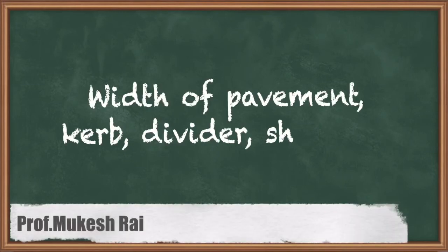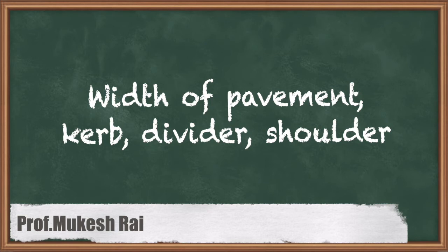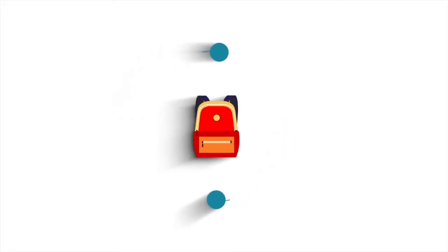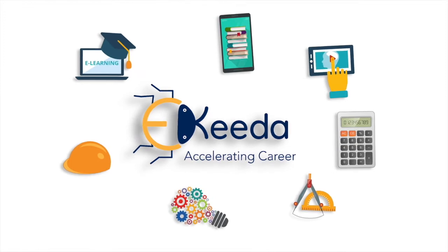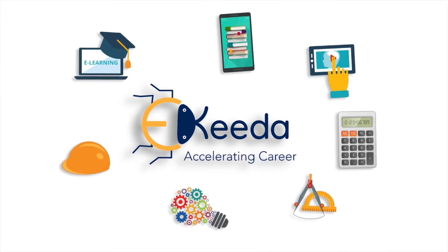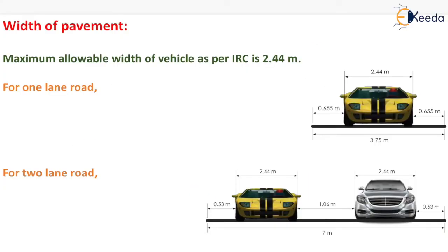Hello students, today we are going to study Width of Pavement, Curve, Divider, and Shoulder. The maximum allowable width of vehicle as per IRC is 2.44 meter, which is shown here.